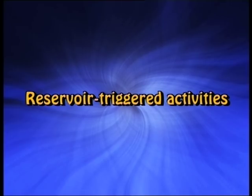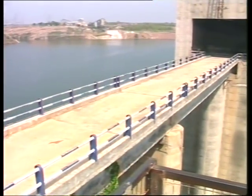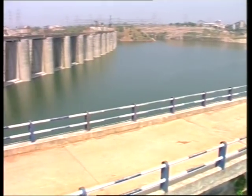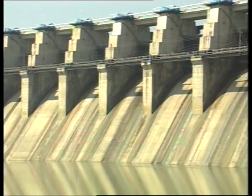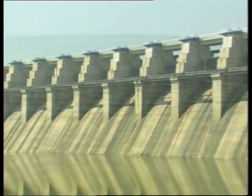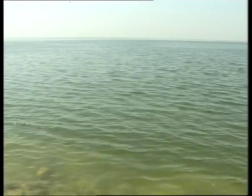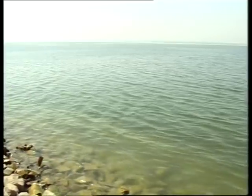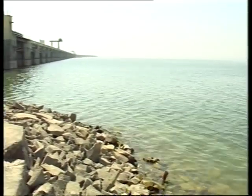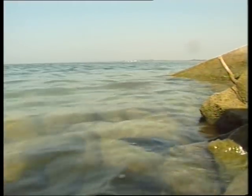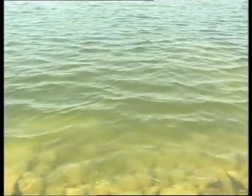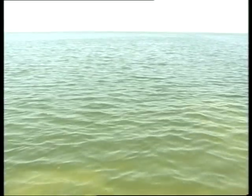Reservoir triggered activities: seismicity associated with the impounding of water in artificially created reservoirs comes in this category. Earthquakes associated with Koyna Reservoir in Western Maharashtra are unique because it is one of the few sites in the world where triggered earthquakes of magnitude 6 continue to occur nearly four decades after the first major activity in 1967. The annual filling cycles continue to weaken the fault zone at Koyna, and changes in stresses introduced by reservoir fluctuations and pore fluid pressure changes cause continuing seismicity.